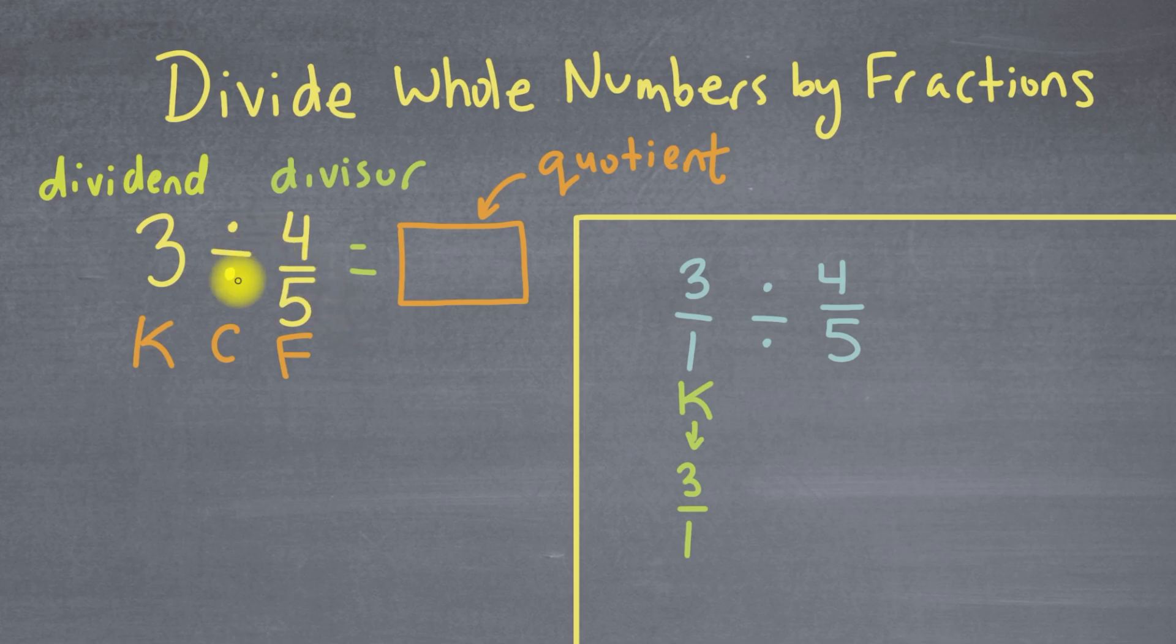The sign, the division symbol, we're going to change. And we're going to change this division into multiplication. And the second fraction, the divisor, we're going to take it and flip it. So 4 over 5 is now going to become 5 over 4. And just so you know, when you flip a fraction, the flipped form of the fraction is called the reciprocal.